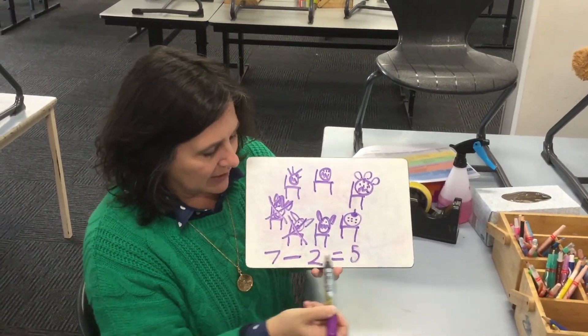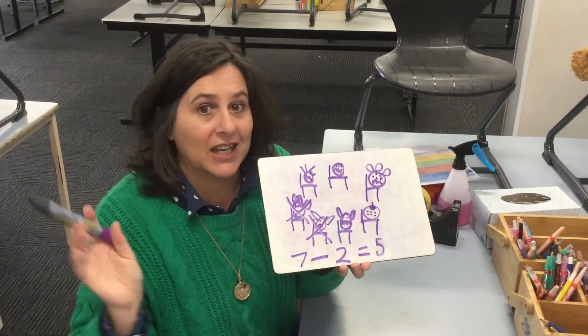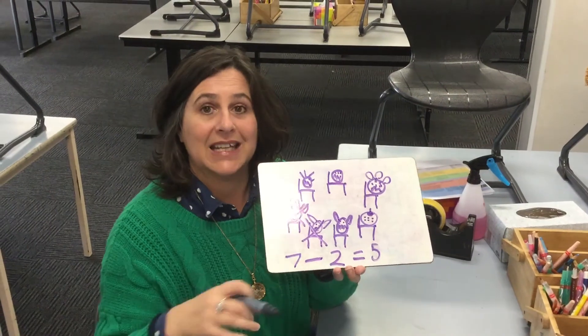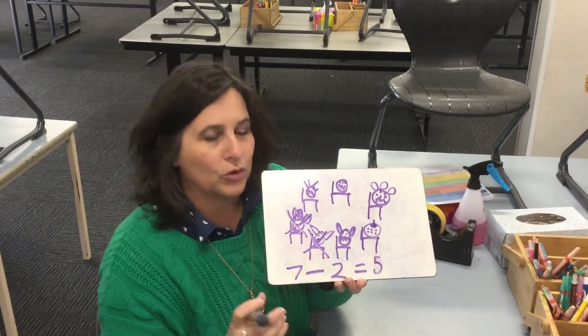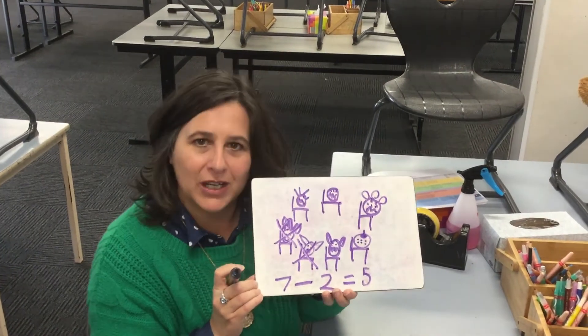And have a go at writing these number sentences. You might not be getting them perfect yet, but that's okay because we're practicing. And that's what it's all about in prep is about practicing and having a go. So you could do at least three or four of these in your books and enjoy doing subtraction.